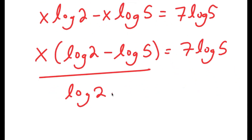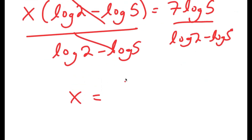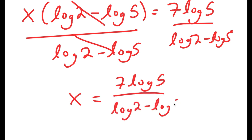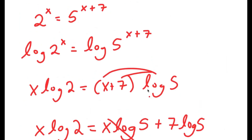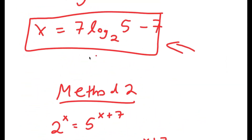Subtracting x times log 5 from both sides, those cancel out and I get x times log 2 minus x times log 5 is equal to 7 times log 5. Factoring out x, I get x times (log 2 minus log 5) is equal to 7 times log 5. Dividing both sides by (log 2 minus log 5), I get x is equal to 7 times log 5 over (log 2 minus log 5), which equals 7 times log base 2 of 5 minus 7.